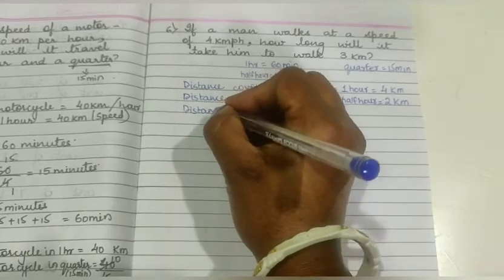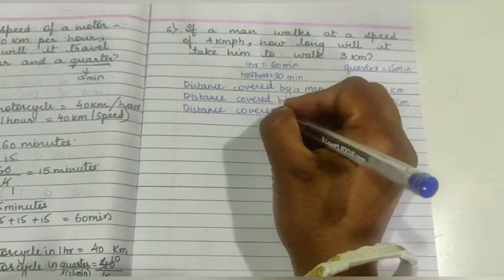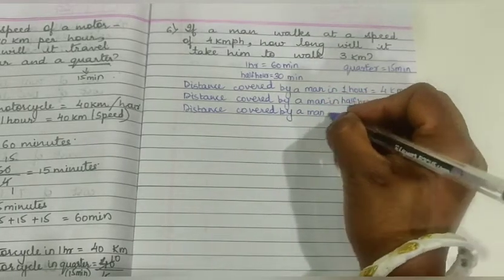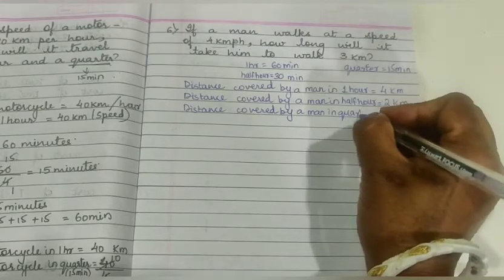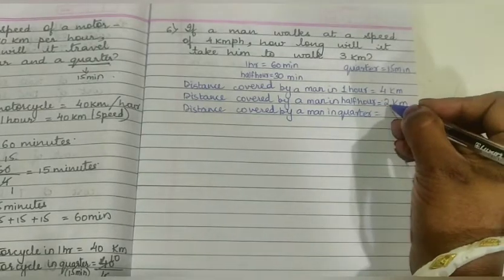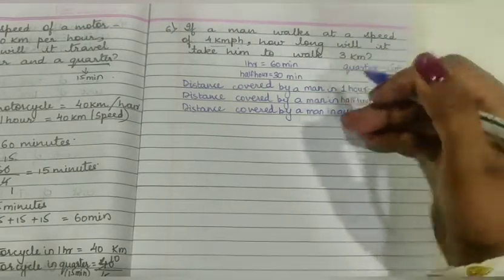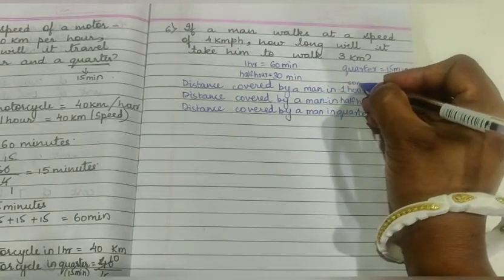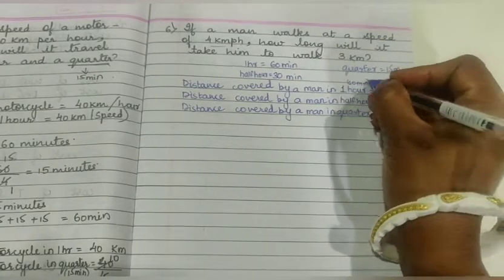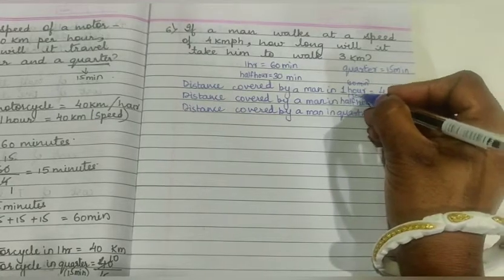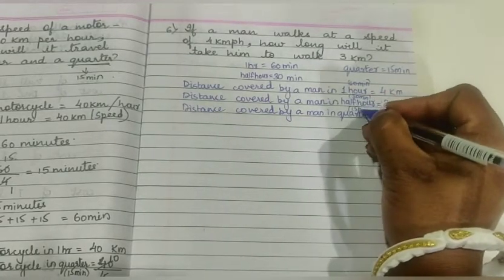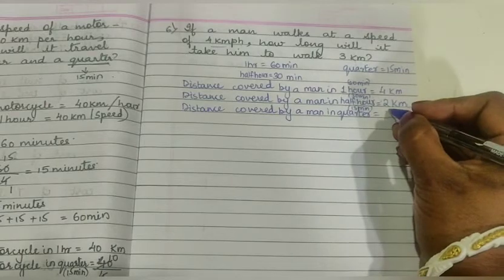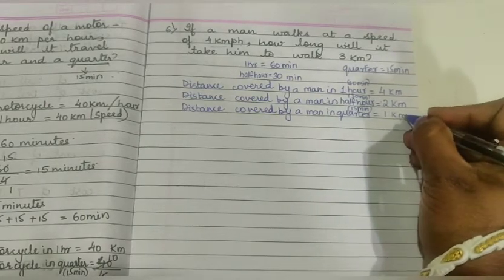Distance covered by a man in quarter hour. If in half an hour it is 2 km, now we have to find half of 30 minutes. This is 60 minutes, this is 30 minutes, and this is 15 minutes. So in 15 minutes, in quarter hour, it will cover 1 km.